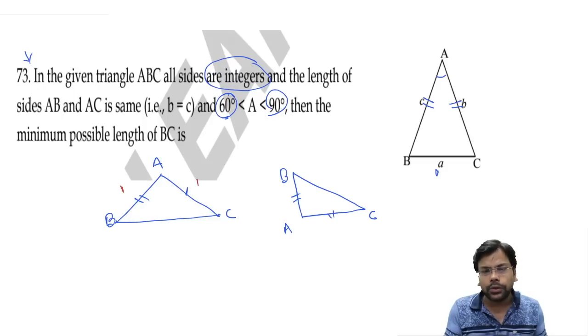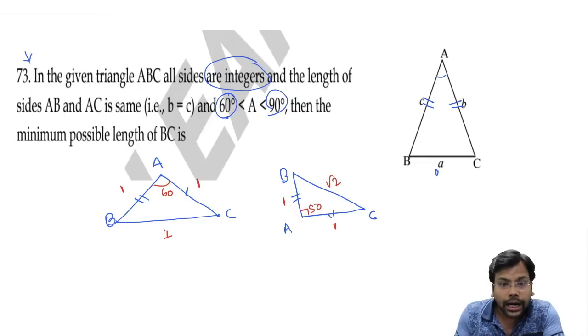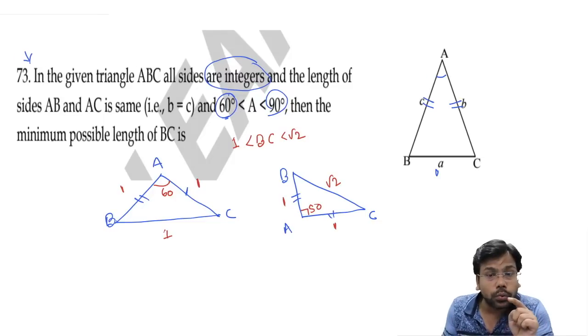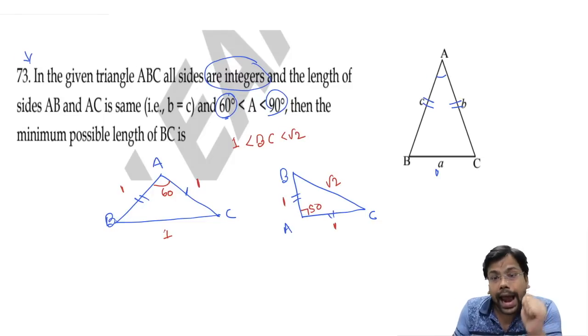The smallest value of these two are 1, 1. If it's 60 degrees, this will be 1. If it's 90 degrees and it's 1, 1, this is root 2. If this is 1, 1 is least integer, so BC will be between 1 and root 2. Because I don't have 60 degrees and 90 degrees, it will be greater than 60 degrees. So I don't need 1.